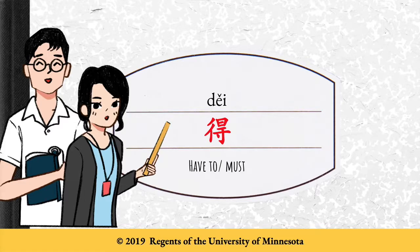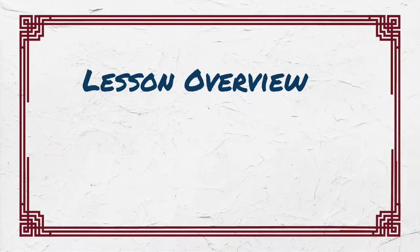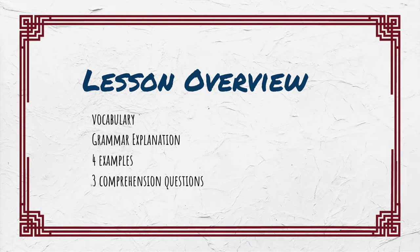大家好。In this lesson, we will introduce 得, which indicates need or necessity. This lesson presents active vocabulary, a short grammar explanation, examples, and comprehension questions.